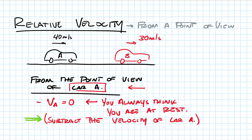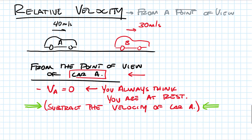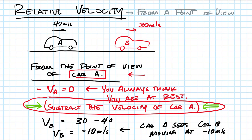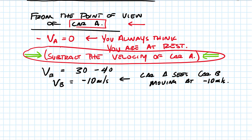The velocity of car B from the point of view of car A is the speed of car B — 30 — minus the speed of car A — 40. So the velocity of car B from the point of view of car A is negative 10 meters per second. Car A sees car B moving at 10 meters per second towards it — it's as if car B is moving towards you at 10 meters per second. To do point of view, we subtract the velocity of the object whose point of view we're taking.